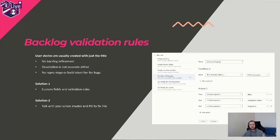There are different solutions. For the process, you need to talk with your scrum master and product owner to set up backlog refinement meetings. But if you look at the tool, in Azure DevOps you can create custom fields and custom validation rules. For example, I created rules so that when I move something to the 'In Progress' state, the Effort, Acceptance Criteria, and Assigned To fields become required. With all the states, when you're about to change the state and something wasn't ready, all the fields became required — and if developers didn't know what to fill in, the work wasn't starting.